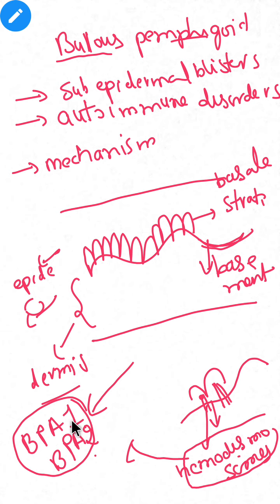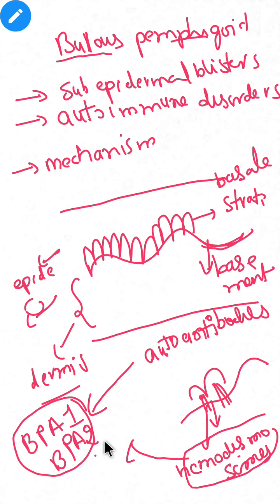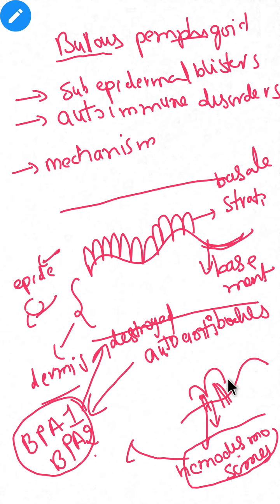In bullous pemphigoid, auto-antibodies are formed against BPA1 and BPA2. When antibodies are formed against these antigens, the antigens get destroyed. This means the connection of stratum basale to the basement membrane is lost — the stratum basale cells separate from the basement membrane, and this separation results in bulla or blister formation.